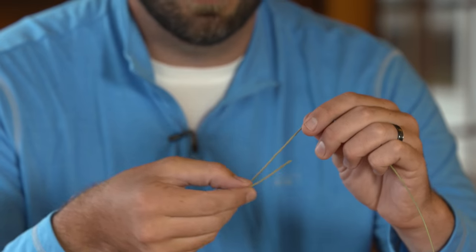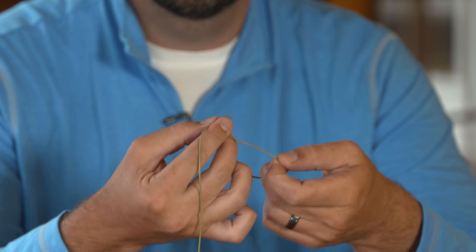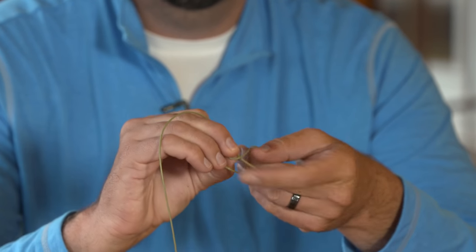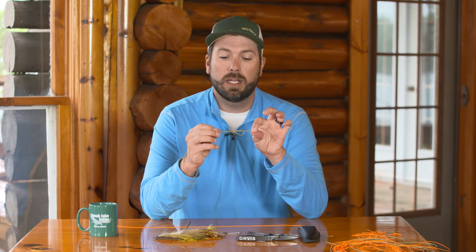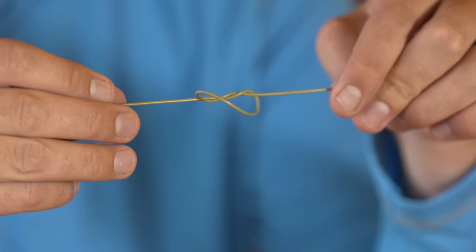The first step is to take that bite guard and tie a double overhand knot. We go through once, then we go through twice, and when we draw this knot tightly, we're going to create a figure eight.